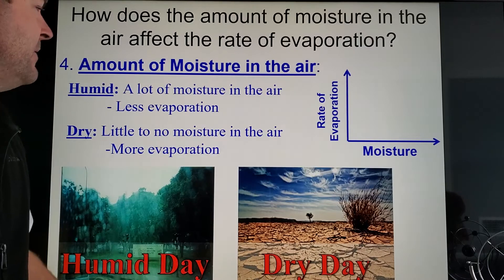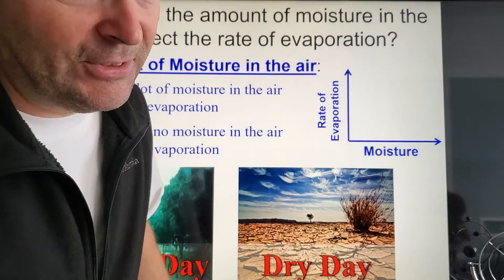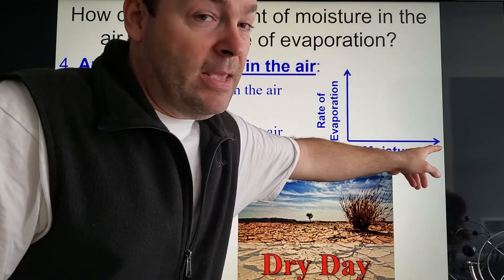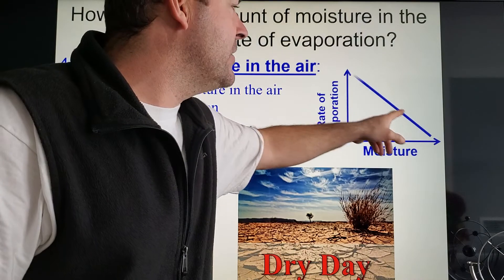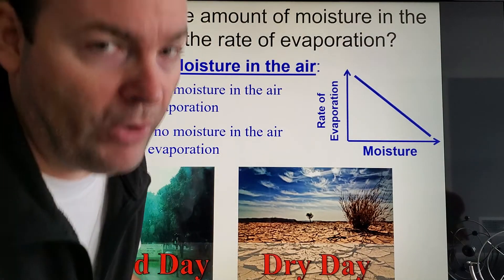So now look at that graph, now it's a little different, right? So if there's more moisture in the air already, then you're going to get less evaporation. A much slower evaporation rate as well.